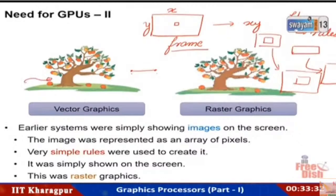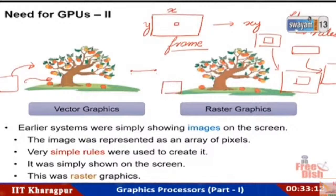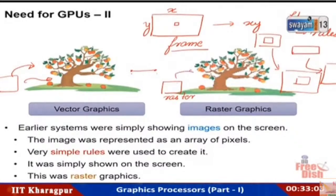In a rule-based system, an image such as a tree full of fruits was much smaller originally, but when expanded it still looks good and is not blurry. In comparison, a rasterized image — where only pixels are stored — when made bigger, degrades in quality. These represent the two paradigms in graphics.